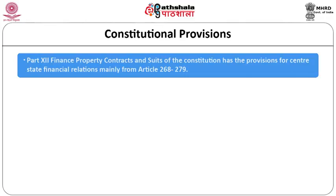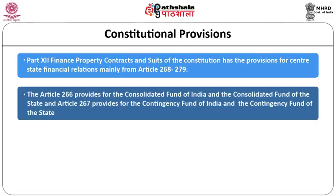Before taking up Articles 268–279, we take up Article 266, which provides for the Consolidated Fund of India and the Consolidated Fund of the state. Article 266 provides that there shall be a Consolidated Fund of India and a Consolidated Fund at the state level. All proceeds or income of the states as well as the union government will be deposited in the respective consolidated funds.